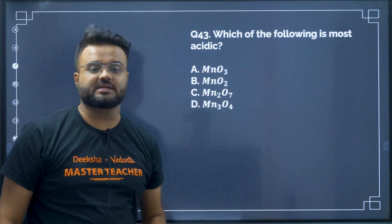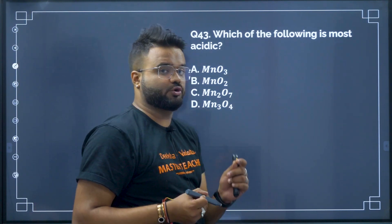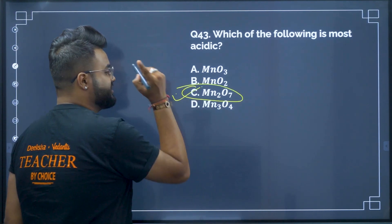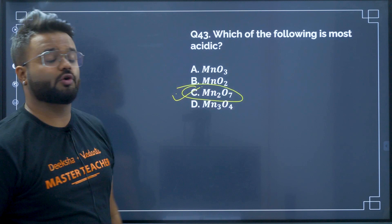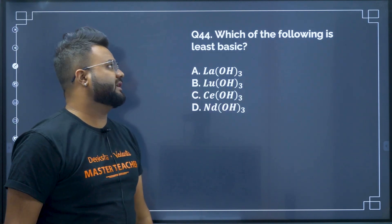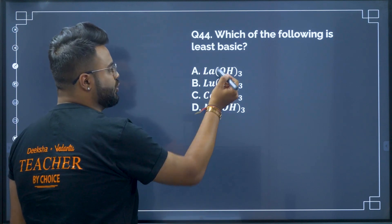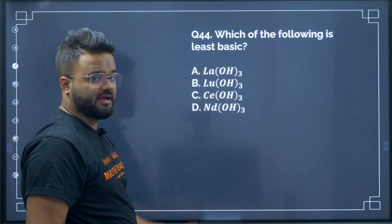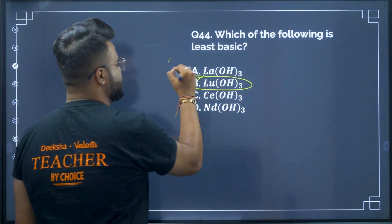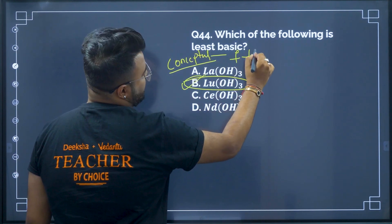Question number 43: which of the following is the most acidic? The more acidic oxide will have more oxygen atoms. The most oxygen atoms are present in Mn2O7, so manganese heptoxide is the most acidic. Question number 44: which of the following is the least basic? Among lanthanum, lutetium, cerium, and neodymium hydroxides, lutetium hydroxide is the least basic. This is a conceptual question from F-block elements.